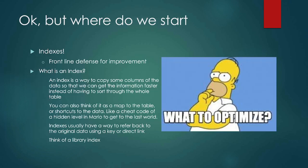So where do we start? Indexes. We are starting with indexes because it's a really good frontline defense. Indexes are one of the first things we'll start with for optimization because the assumption is that if you haven't already done an index, this is the biggest bang for your buck. An index is how we can start working with our very large data sets and make it a little faster to go through them. An index will actually have us copy some columns of data so that we can get the information faster. You could think of it like a map, a blueprint, or even a cheat code.